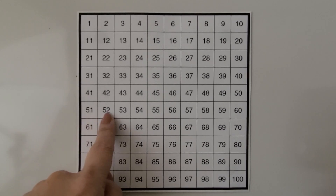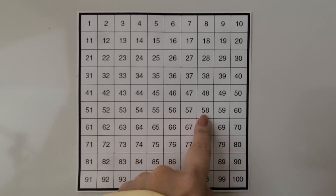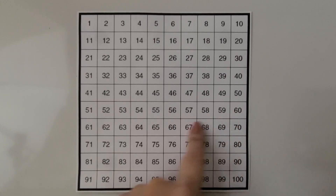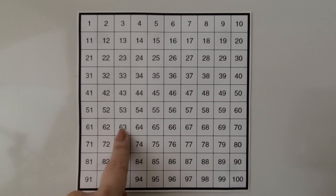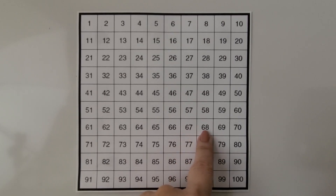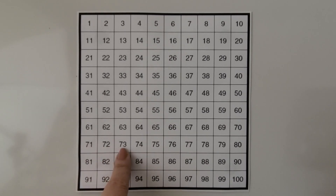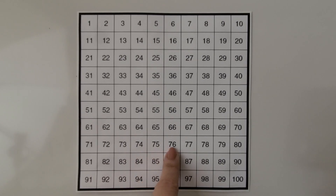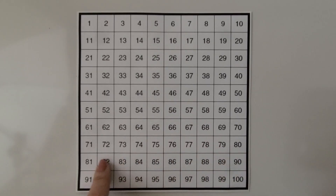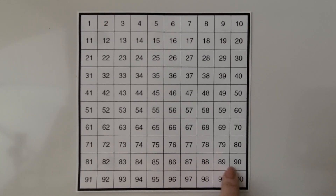51, 52, 53, 54, 55, 56, 57, 58, 59, 60, 61, 62, 63, 64, 65, 66, 67, 68, 69, 70, 71, 72, 73, 74, 75, 76, 77, 78, 79, 80, 81, 82, 83, 84, 85, 86, 87, 88, 89, 90.